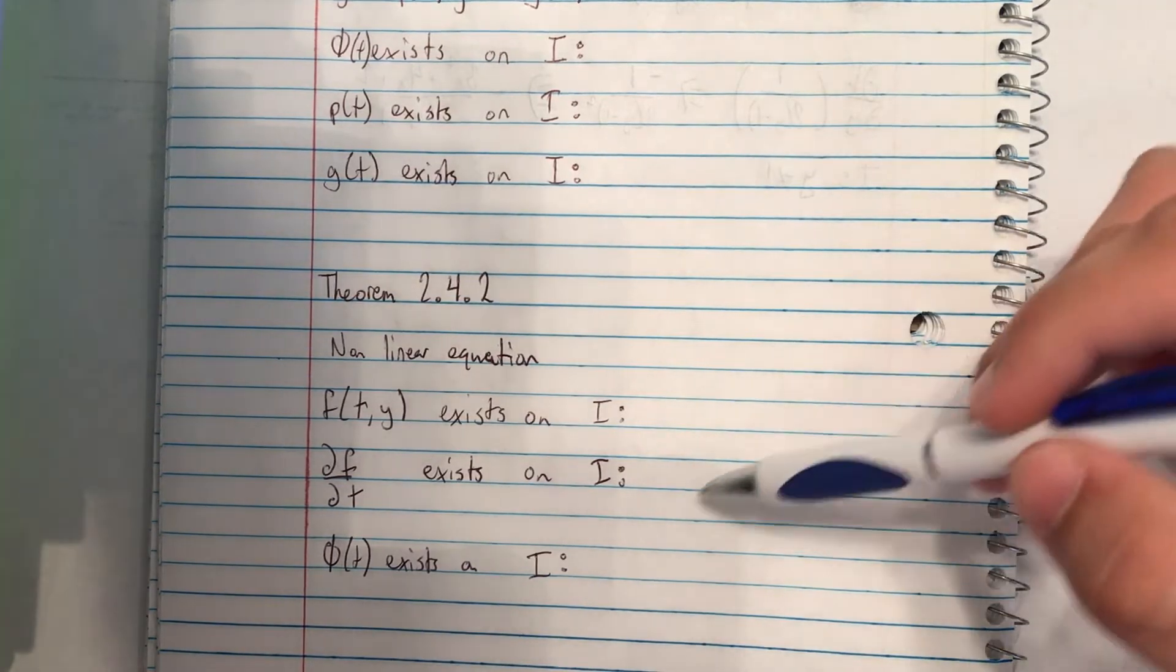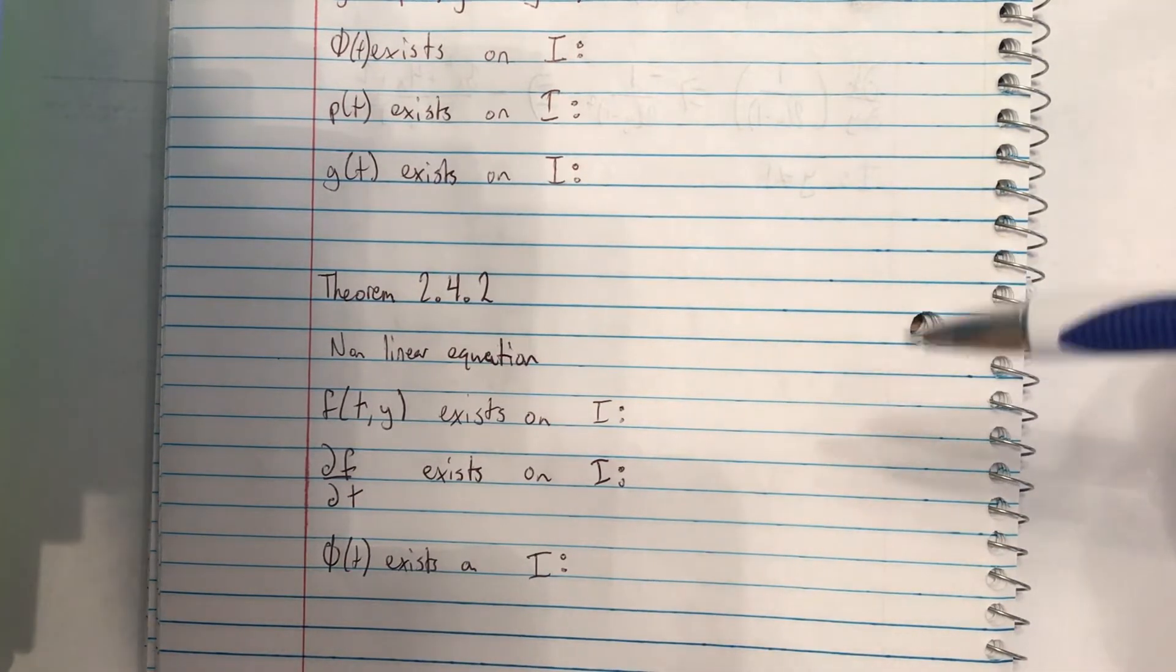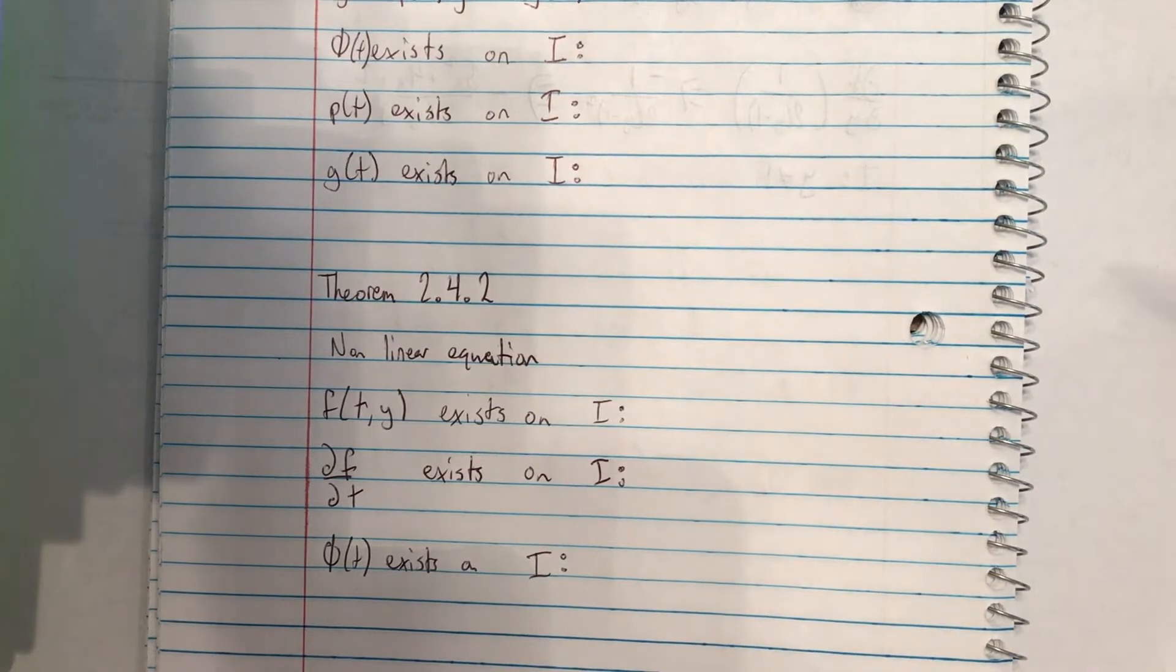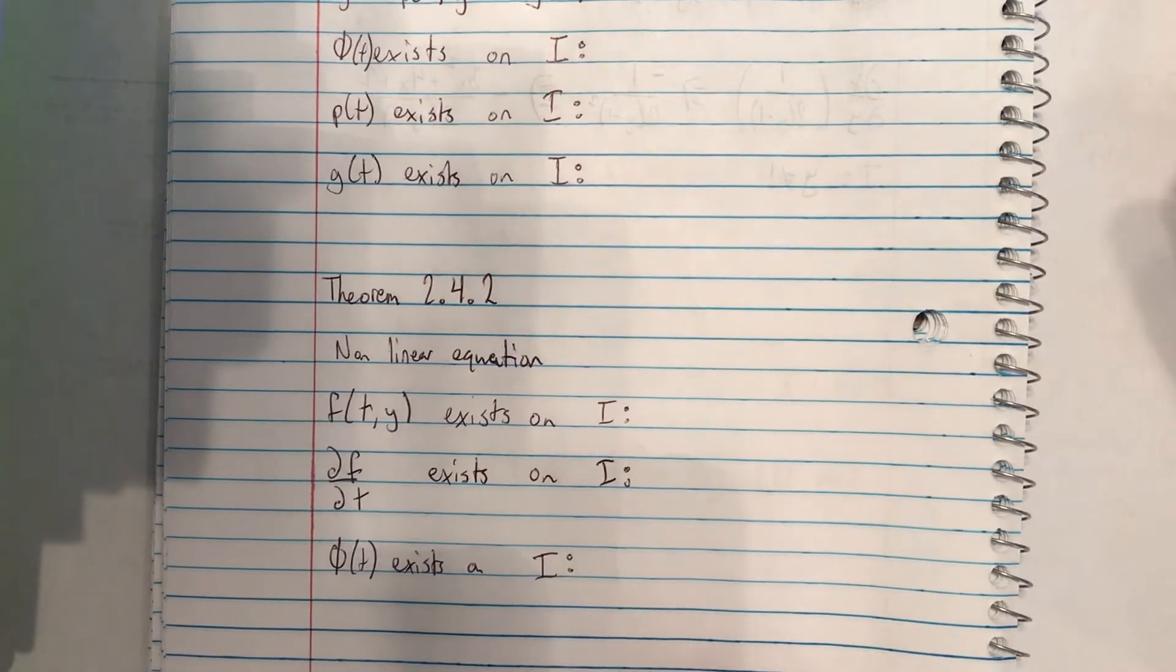And with these two, we compare them along with the initial condition and we can say that some solution exists on interval I. So we will go ahead and look at some examples.